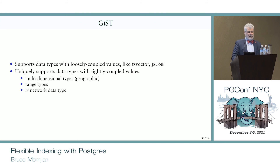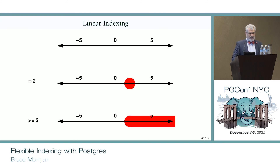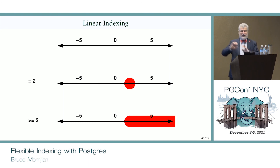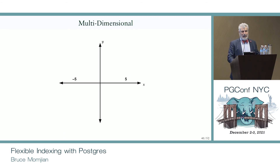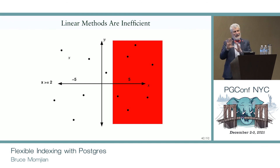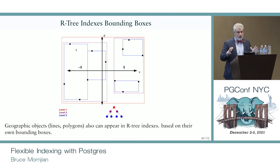There's another option called JSONB Path Ops, which allows you to hash the whole JSON path string and look up exact matches. You can't look up key values separately, but it's another way of doing lookups with JSON and GIN. GIST is very good for multidimensional data types like GIS, range types, and IP networks. Linear data is like a number line — great when values are orderable. But not all data comes at us that way. Two-dimensional point data, for example, can't be efficiently searched with a simple greater-than or less-than on one axis.